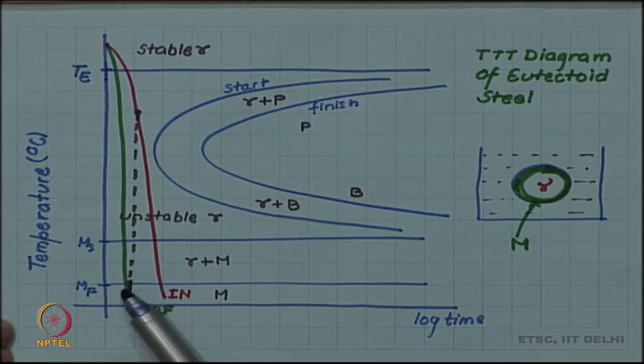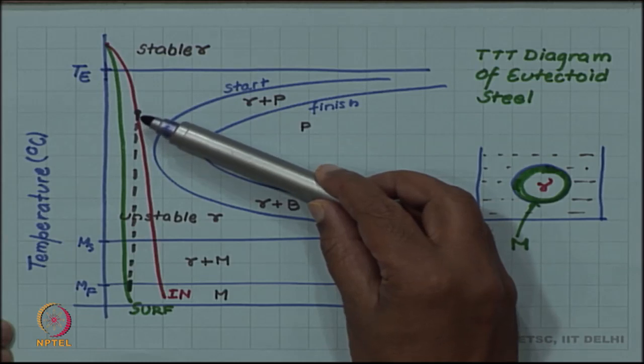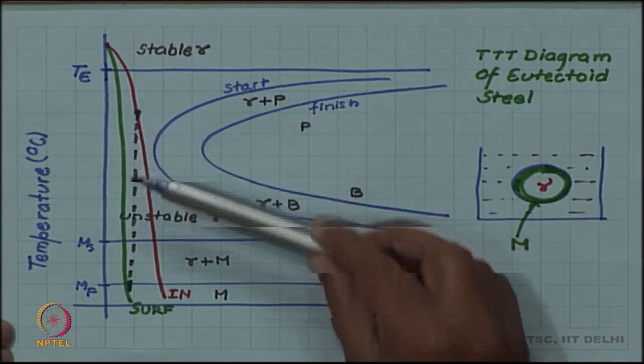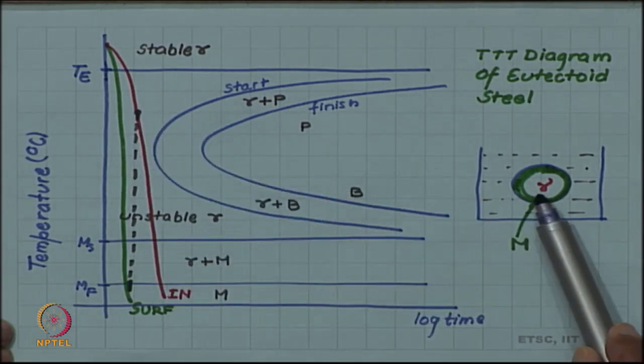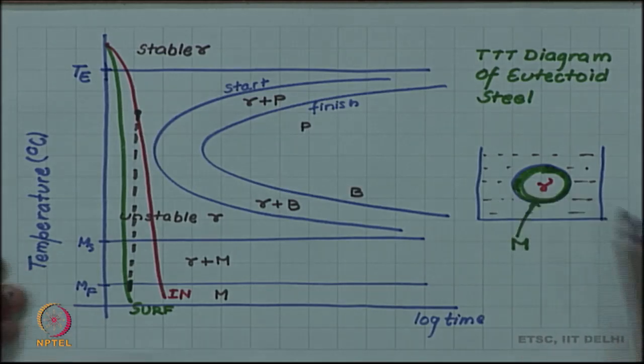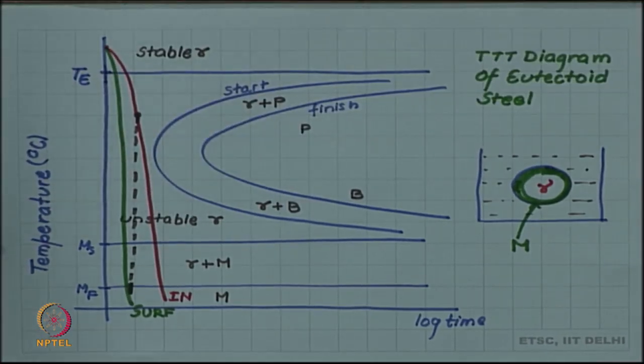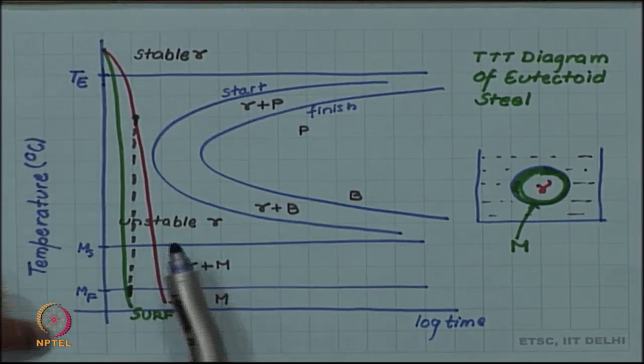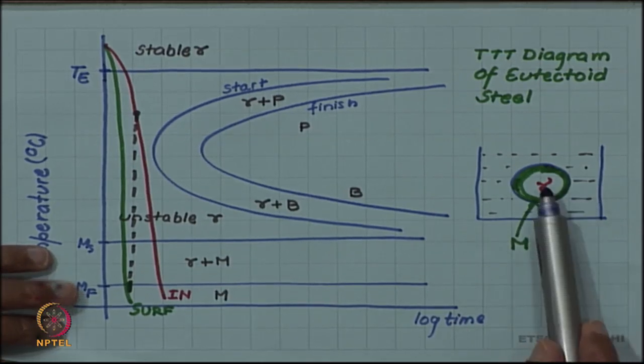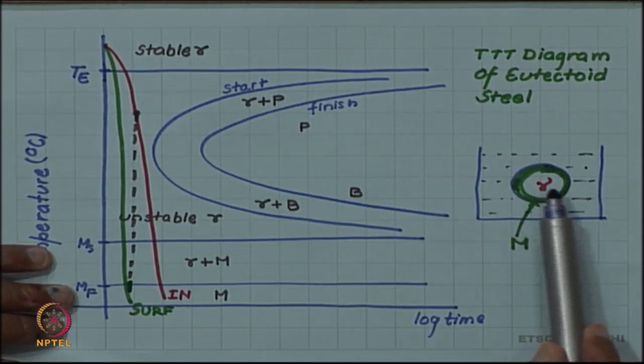When the surface has formed martensite, the inside is still warm at that time and it is still austenite. When that austenite wants to transform to martensite, the volume expansion is resisted and residual stresses and cracks may generate. This was happening because the whole sample was not able to transform to martensite at the same time.